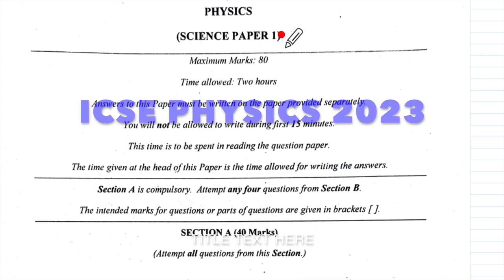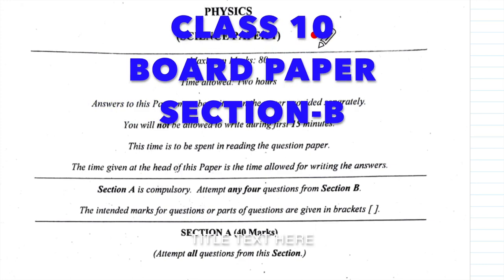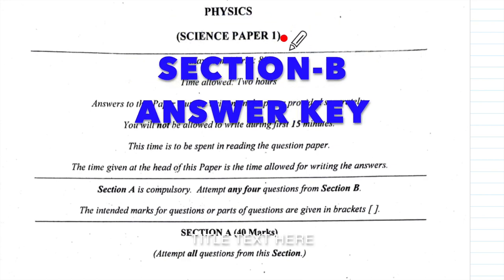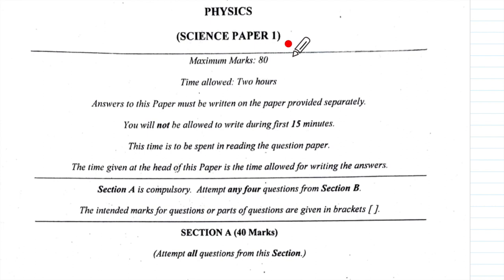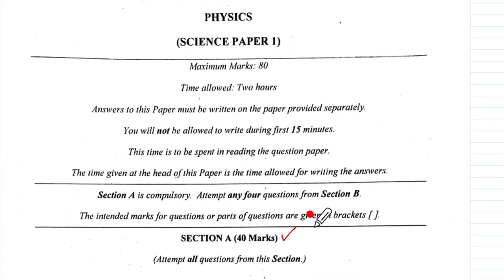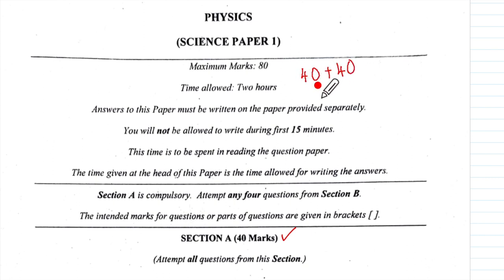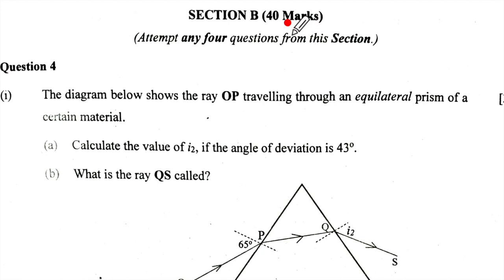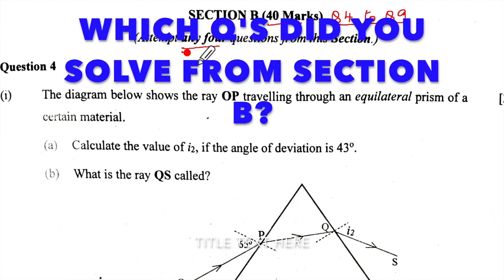This is the Physics Science Paper 1 of ICSE Board Examination of Class 10. The paper finished on 17th March and I have already solved and posted the solutions and answer key of Section A. Now we are coming to Section B, which is also for 40 marks — so Section A and Section B are 40 marks each. In Section B, you have questions 4 to 9, that is 6 questions, from which we have to solve any 4.